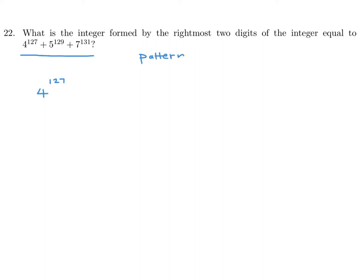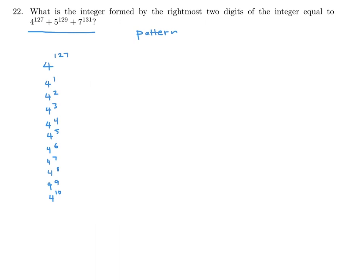Let's start with 4 to the power of 127. Going through powers of 4, usually 4 or 8 terms is enough, but let's go up to a little more than 10 and see if there's a pattern. We can then extrapolate that pattern all the way up to 4 to the power of 127.